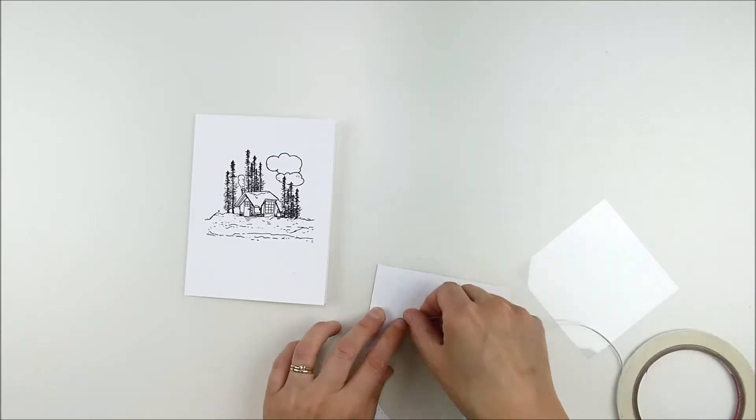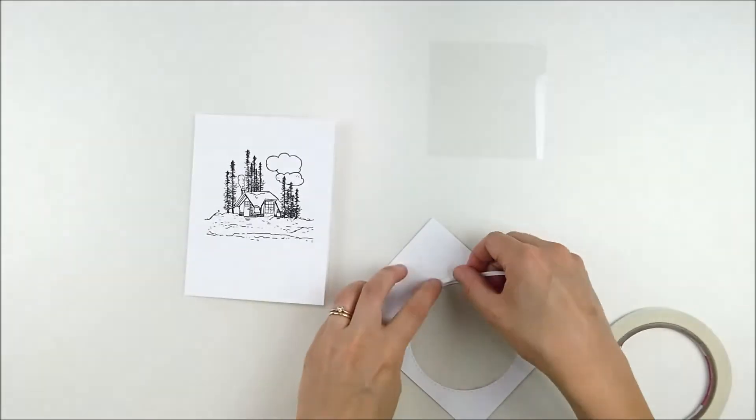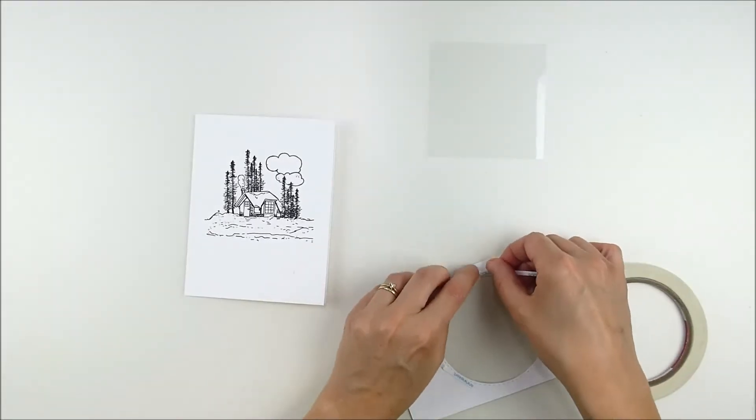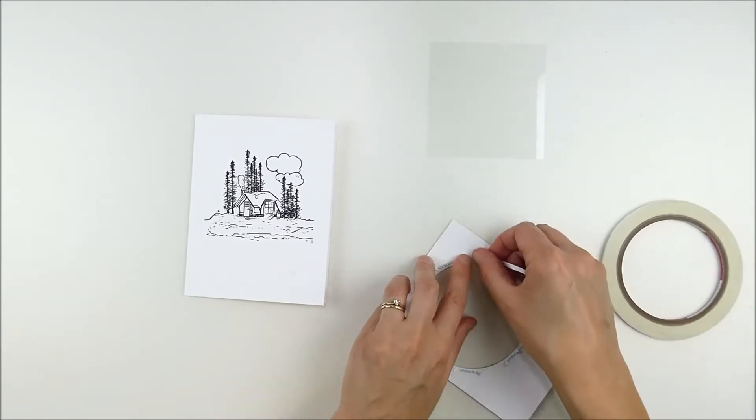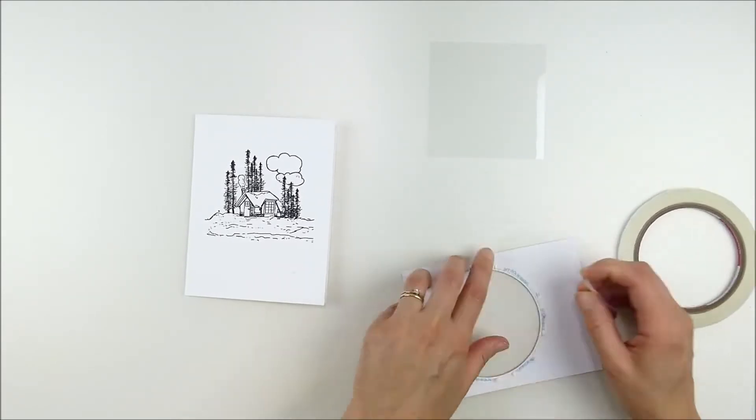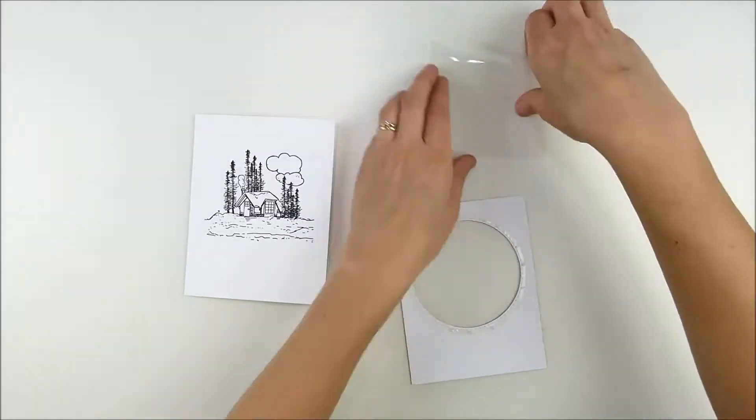So because we're going to make this a shaker card, I have a score of acetate, clear acetate. I buy this for making shaker cards. You can use scraps off of packaging. This particular piece was just barely big enough to cover my window and I didn't have any bigger pieces.